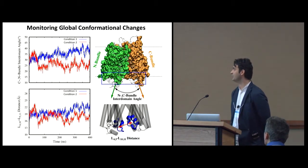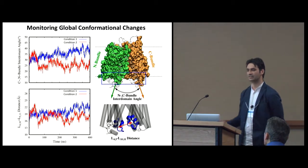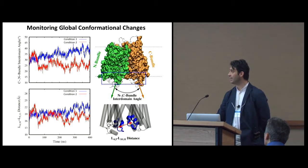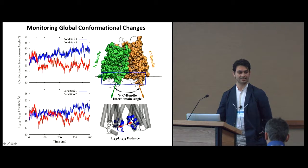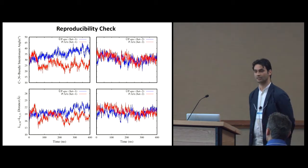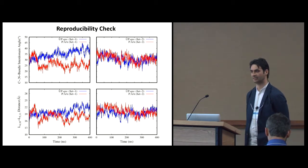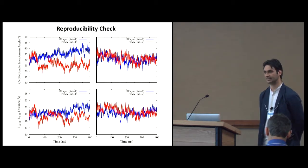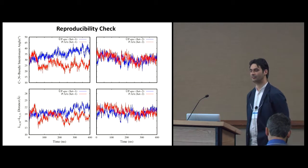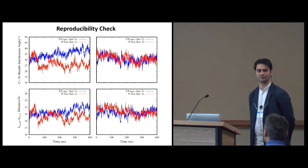If you do these simulations, you may see interesting things. For instance, looking at the inter-domain angle between the two major domains — what I call the CN bundle inter-domain angle — or the distance between two loops, we see different behavior under different conditions like different protonation states. You can get excited and publish findings, which is not uncommon. But if you repeat the simulations, you may not get the same results. There is a lot of stochasticity in molecular dynamics, especially for processes that take milliseconds.